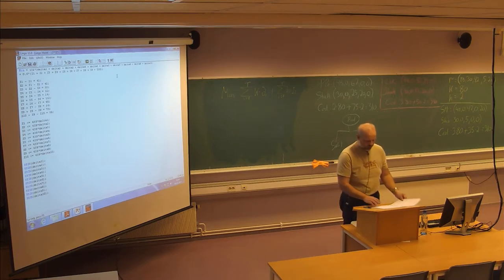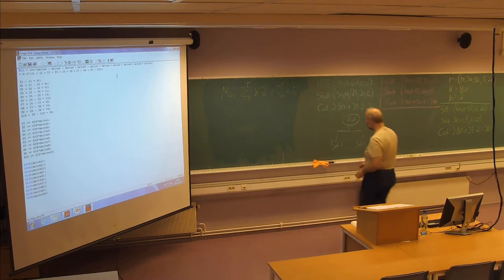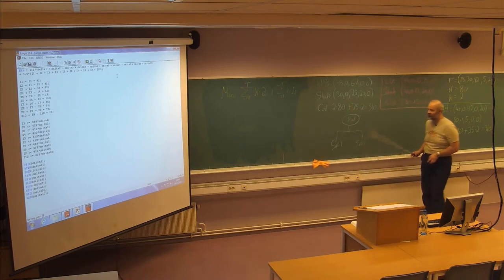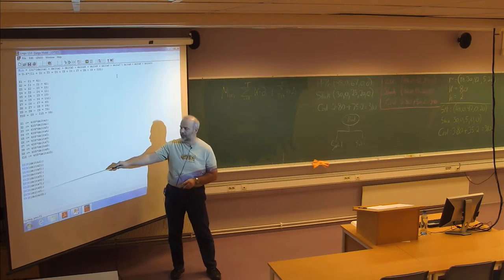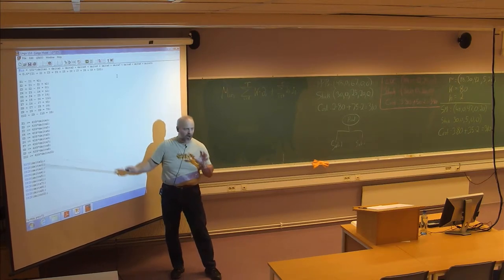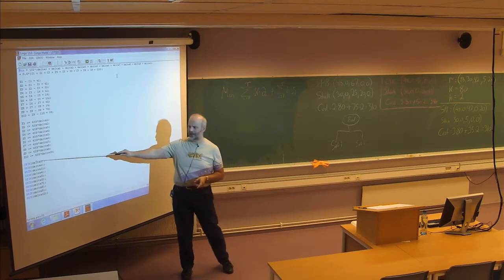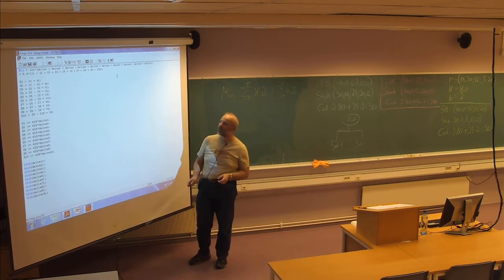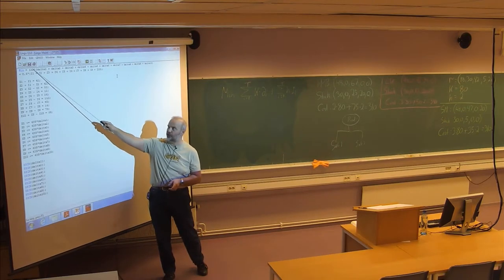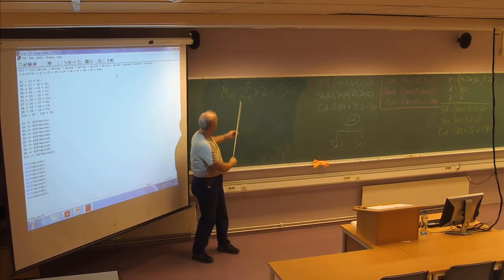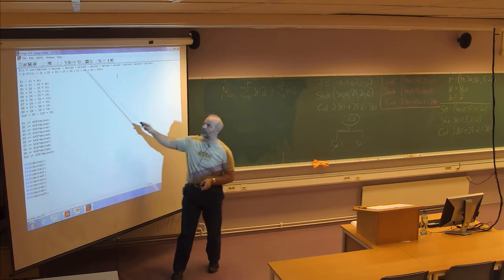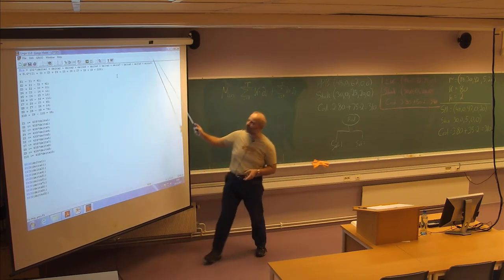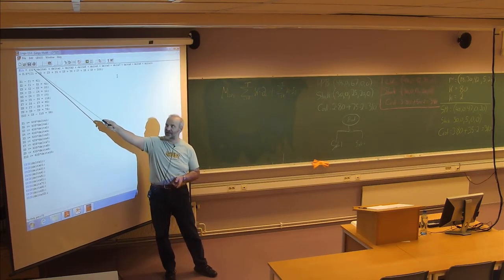So let's look at the LP formulation for this problem. This is the LP formulation for the problem used in the textbook. The delta variables are defined to be binary — either 0 or 1 — and you have 10 delta variables. In this example, the setup cost is 132. The minimization function includes the setup cost as the sum over all 10 periods: delta 1 through delta 10, multiplied by the setup cost K which is 132. The holding cost in this example is 0.6, multiplied by the inventory on stock for all 10 periods.